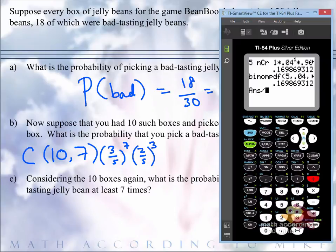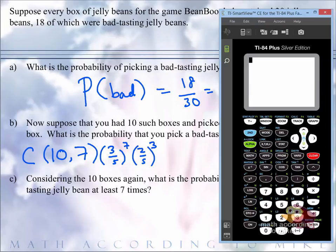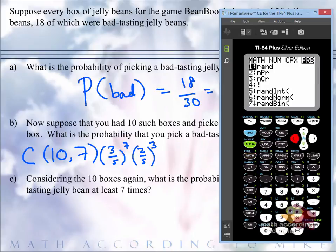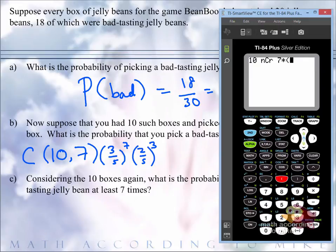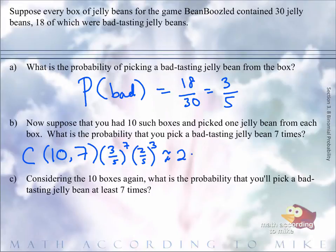Putting this into the calculator, I'm going to clear all that out, we'll do 10 combination seven times, use parentheses here, three-fifths raised to the seventh, and then times two-fifths raised to the third. Hitting enter, we have a 21.50% chance of this happening. So you have a 21.50% chance that from 10 boxes, you get seven bad jelly beans.